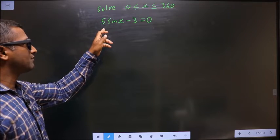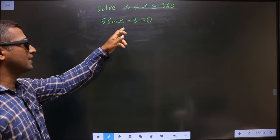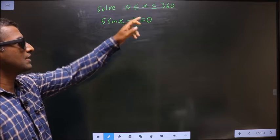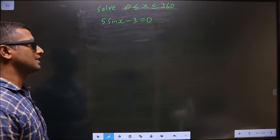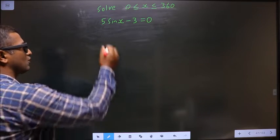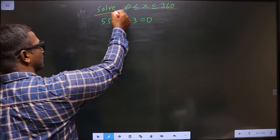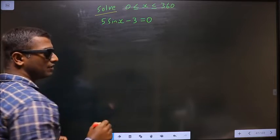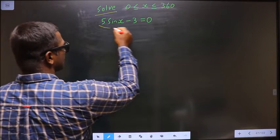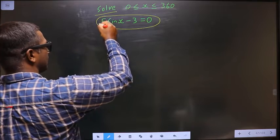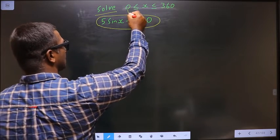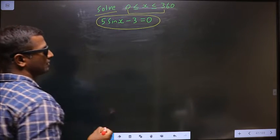Solve 5 sin x minus 3 equal to 0, where x lies between 0 to 360 degrees. You need to find the values for x satisfying this equation, and they should also lie in the given interval.